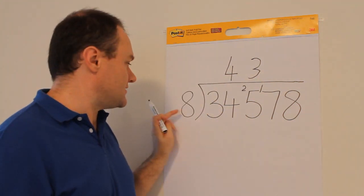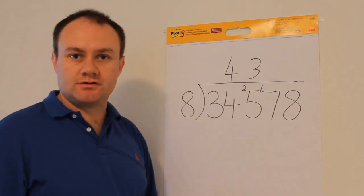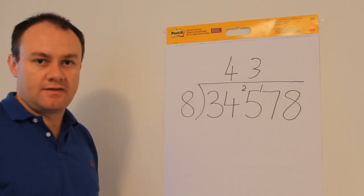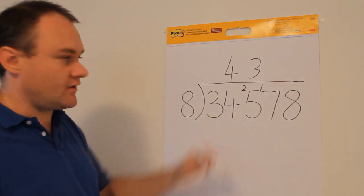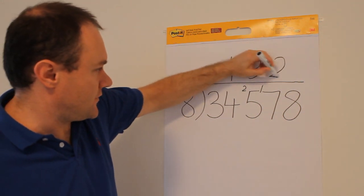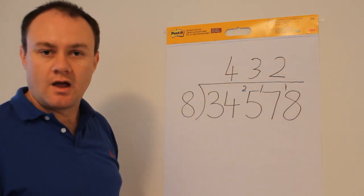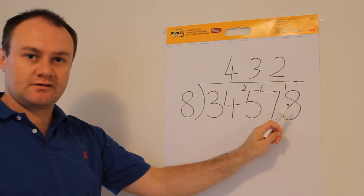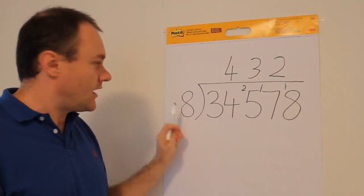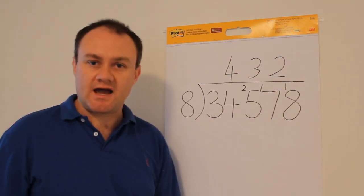Next question then: how many times does eight go into 17? And the answer is going to be twice with one left over. Up there goes the two. Put the one there in front of the eight.